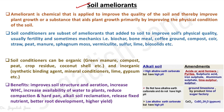By definition, ameliorant is a chemical that is applied to improve the quality of the soil, thereby improving plant growth — a substance that aids plant growth primarily by improving the physical condition of the soil. However, it is also enhancing all other properties, because if the soil health is increasing and soil qualities are improving, then it will ultimately affect other soil conditions to be optimum for plant growth.